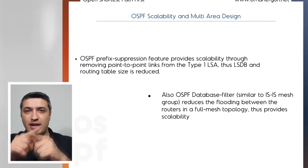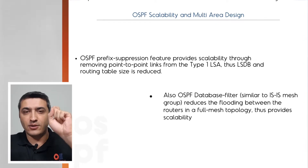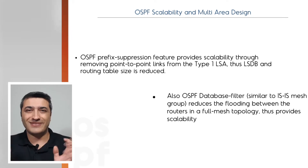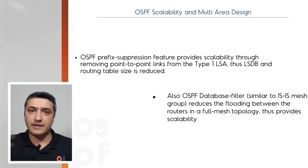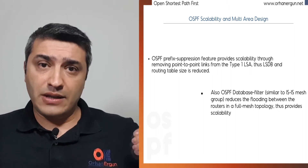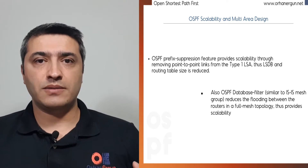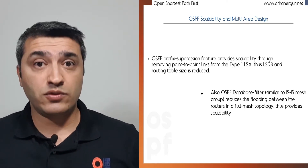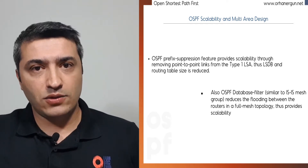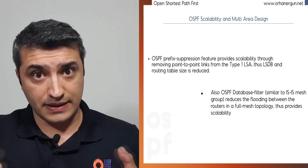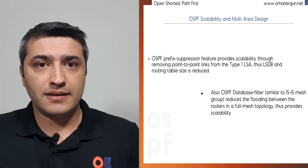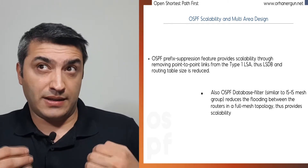With prefix suppression, we remove IP address information from point-to-point links. Two routers connected via one link assigned 192.168.0.1 and 192.168.0.2 — you don't need those addresses. You can have loopback interfaces for BGP, overlay, LDP, etc., but you don't need point-to-point addresses. When you remove this IP address information from the routing table and link-state database, you have less information — which is not only good for scalability of the routing table and LSDB, but also for troubleshooting, allowing faster problem resolution.